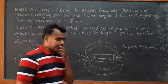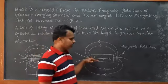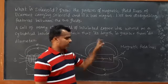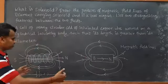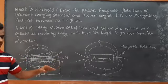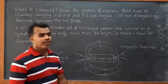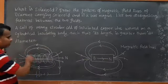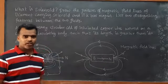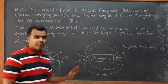Moving to the bar magnet: inside the bar magnet, the magnetic field lines go from south to north, and outside they go from north to south. Comparing the two diagrams, the solenoid behaves like a bar magnet because the magnetic field inside and outside follows a similar pattern.